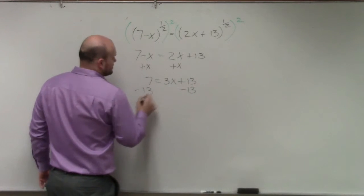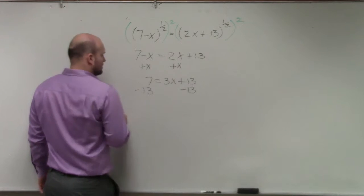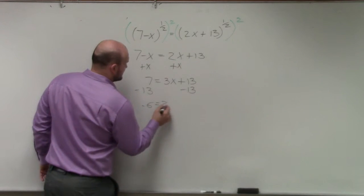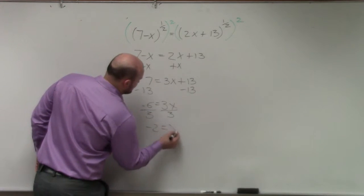Subtract 13, subtract 13, and I get negative 6 equals 3x. Divide by 3, divide by 3, negative 2 equals x.